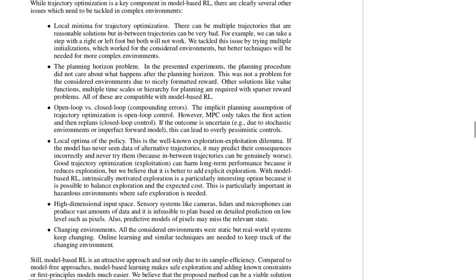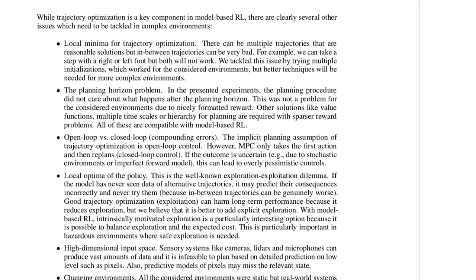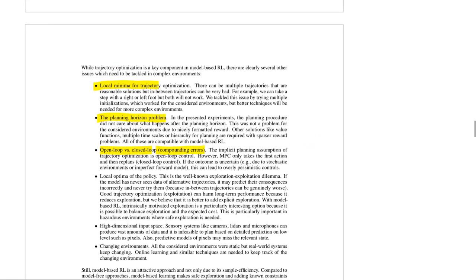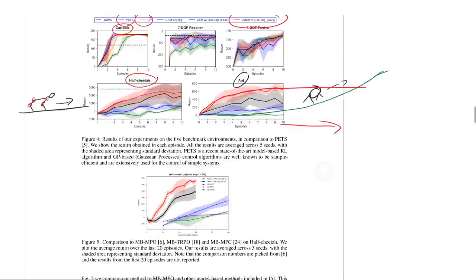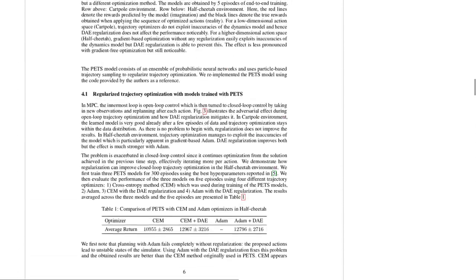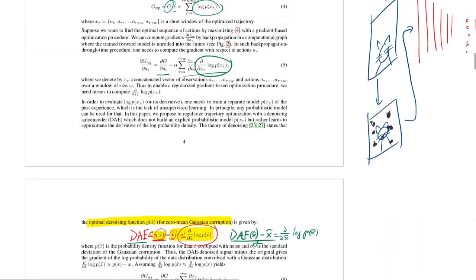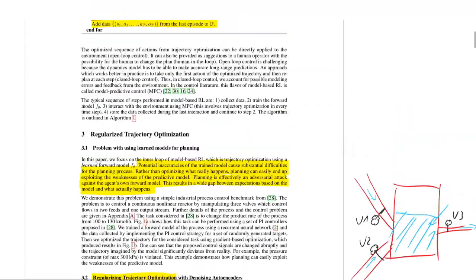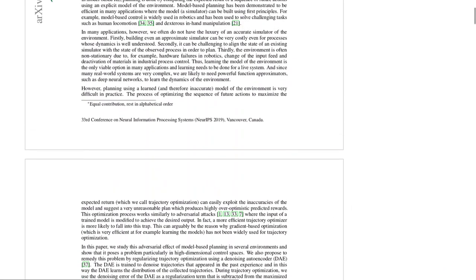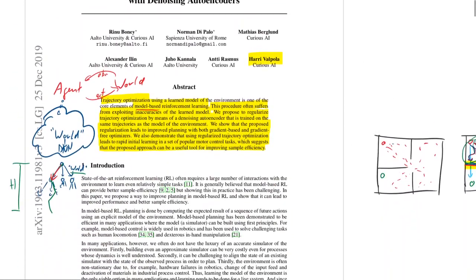They have a long discussion of remaining problems — local minima, the planning horizon problem, and open-loop versus closed-loop compounding errors in planning. I invite you to check out the paper for more details; it's pretty cool and written very well. See you next time, bye bye.